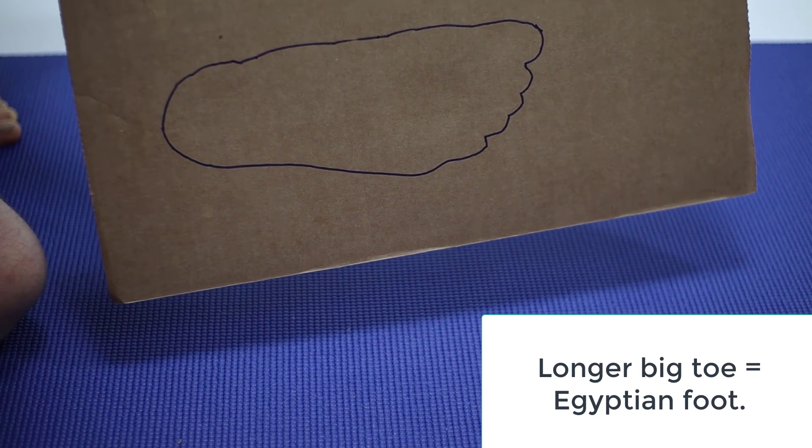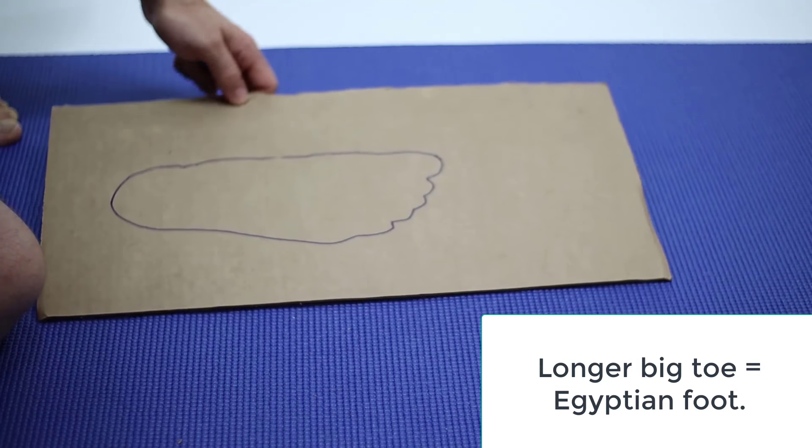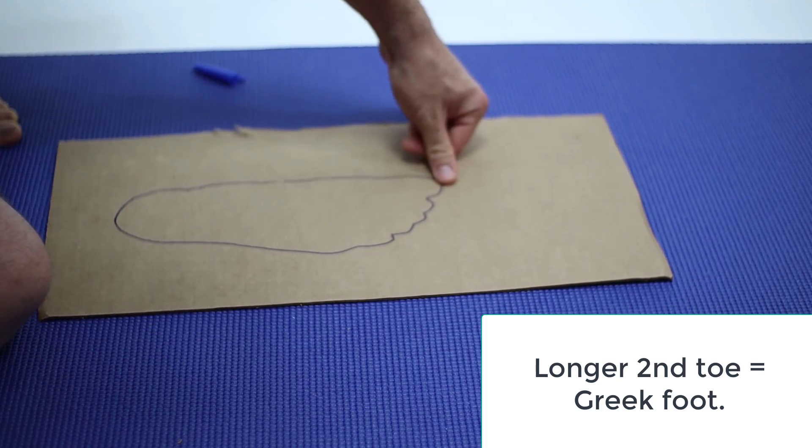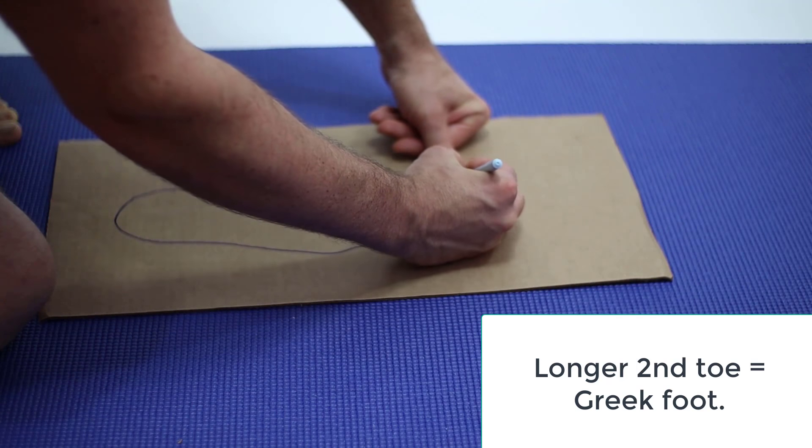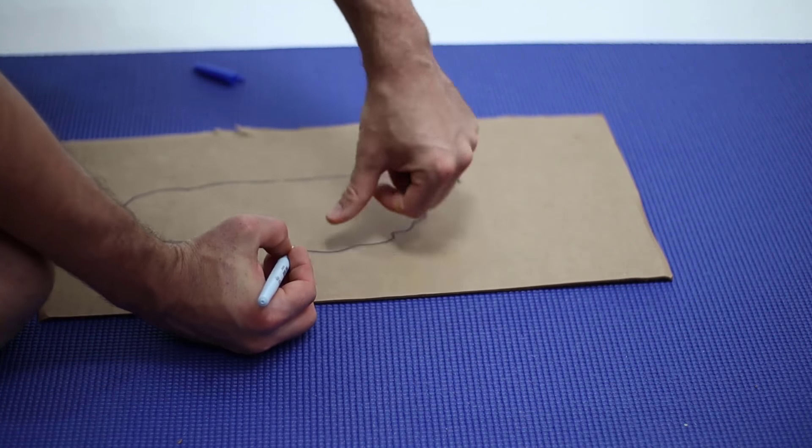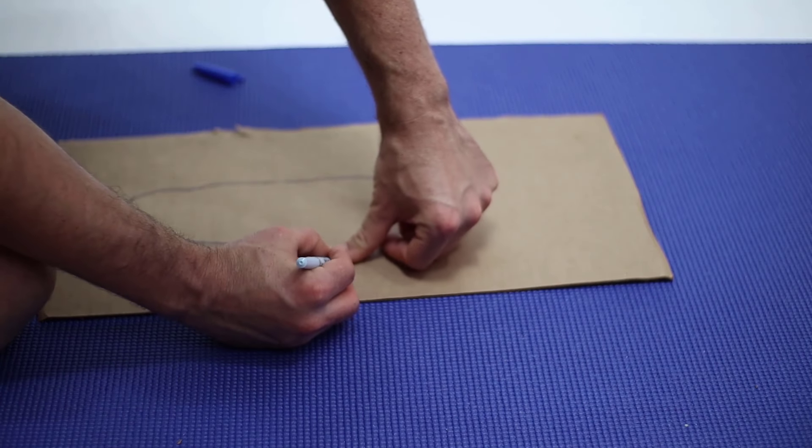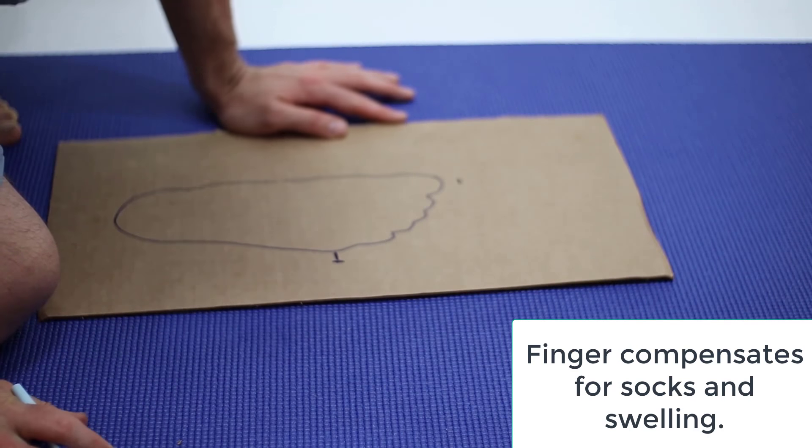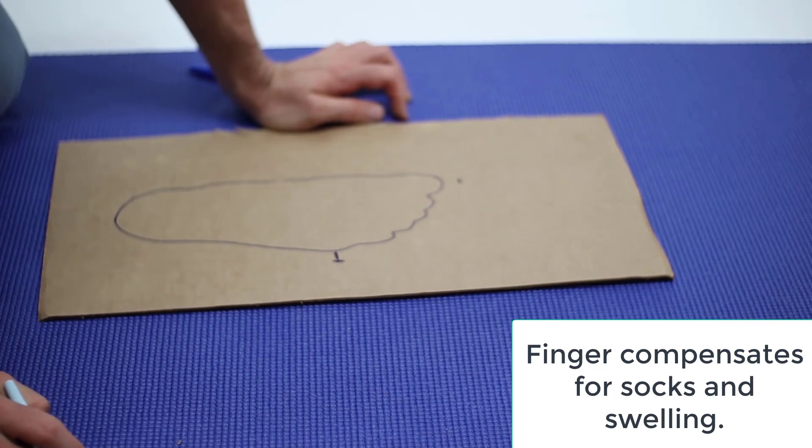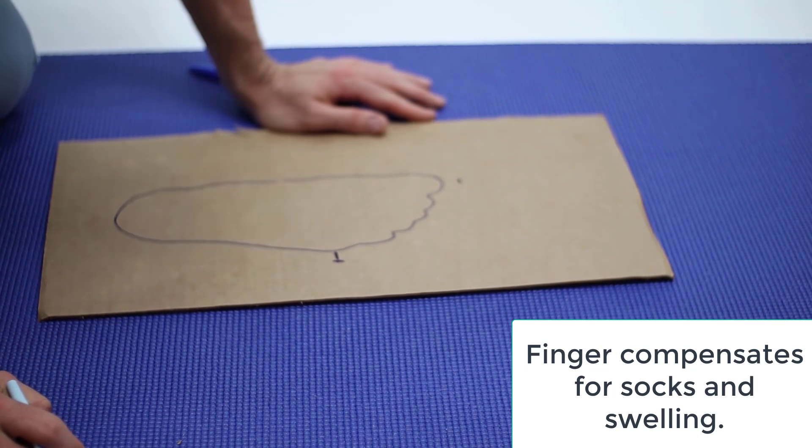Some people have the longer second toe. Here's what you want to do: add finger length or thumb length to the top. I'm going to add a little bit right there, and you probably want to add a thumb length to the side, just to be safe. You can always fill up your shoe later with an insert or a thicker sock, but you can't make it smaller.